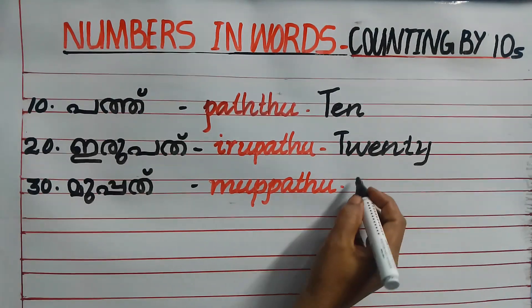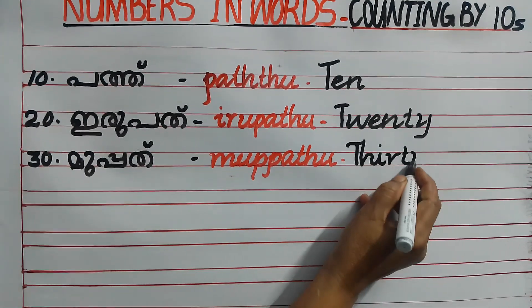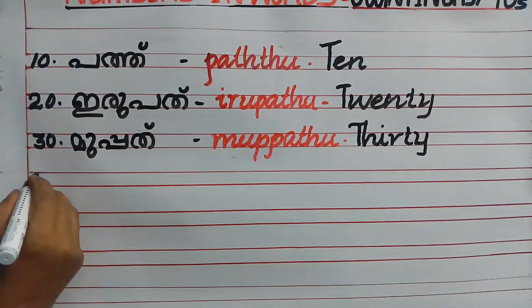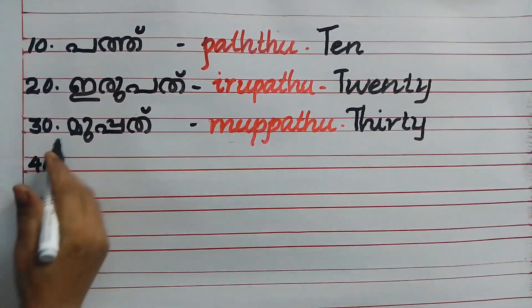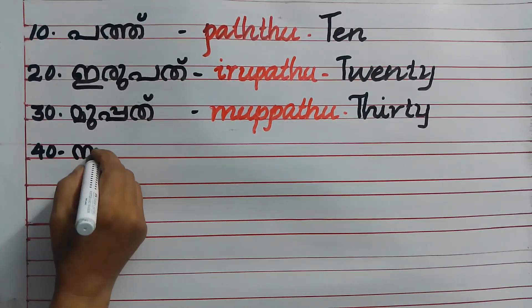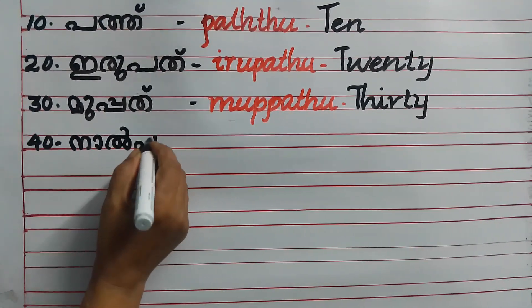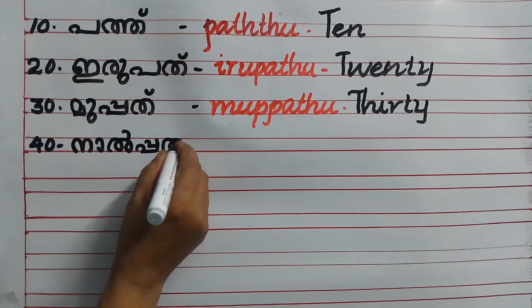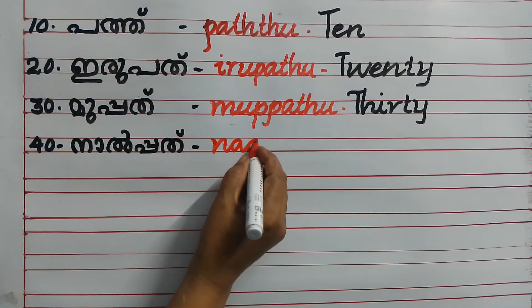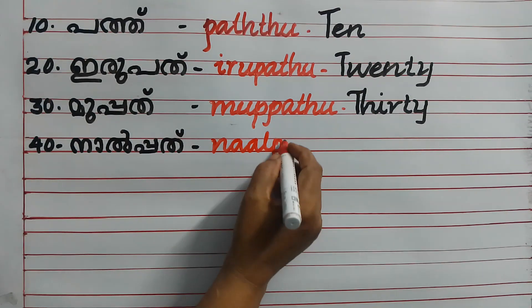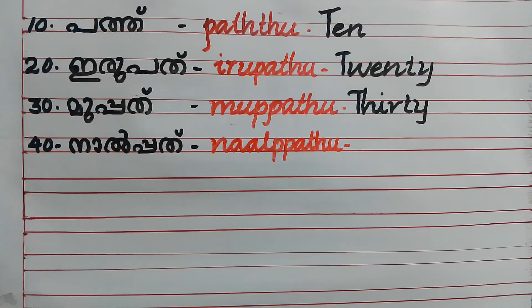10, 20, 30 — Nalpathu. 10, 40 — Nalpathu. 40, 40.